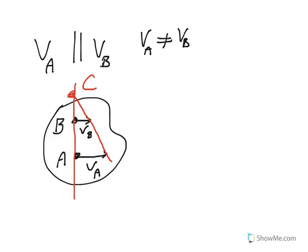Notice that velocity has to be 90 degrees to the radius. Velocity of B has to be perpendicular to BC, and velocity of A has to be perpendicular to AC.